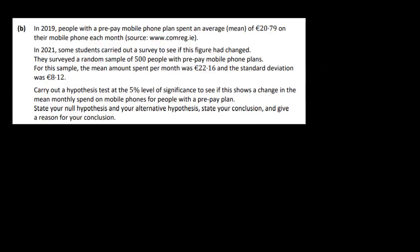Let's move on to the next part of the question — this is a hypothesis test. In 2019, people with a prepay mobile phone plan spent on average a mean of €20.79 on their mobile phone each month. In 2021, some students carried out a survey to see if this figure had changed. They surveyed a random sample of 500 people with prepay mobile phone plans. For this sample, the mean amount spent per month was €22.16 with a standard deviation of €8.12. Carry out a hypothesis test at a 5% level of significance. State your null hypothesis, alternative hypothesis, conclusion, and give a reason for your conclusion.